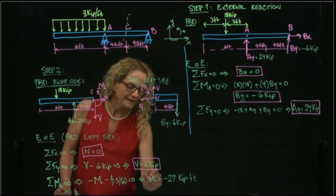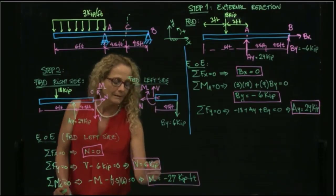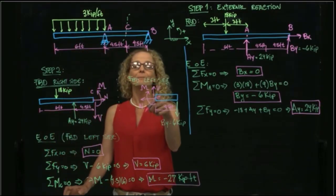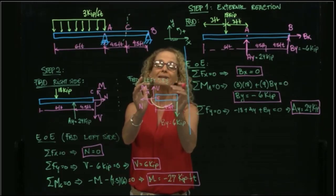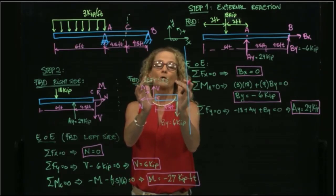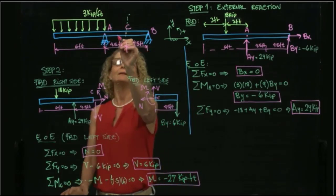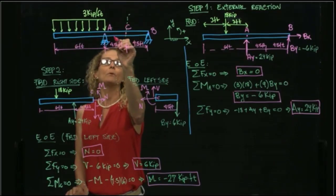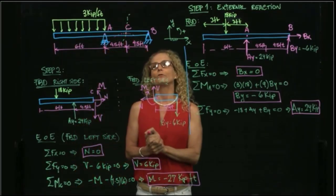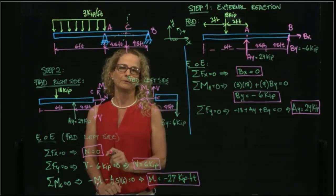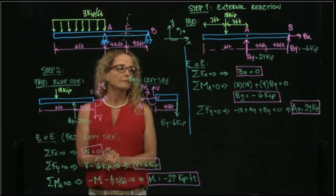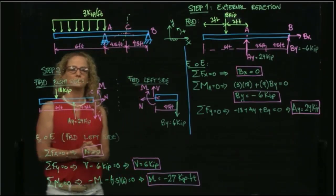So what does it mean that it is negative? It means that it goes in the opposite direction. Positive means that the beam is concave up. So that means that in this particular point, the beam is going to be concave down, because that moment is negative. And this is the solution of this problem.